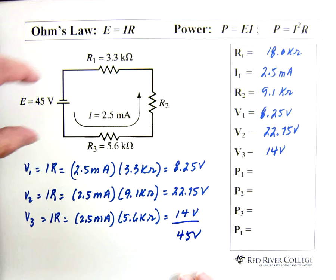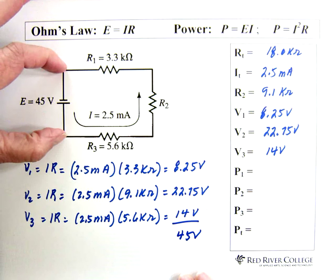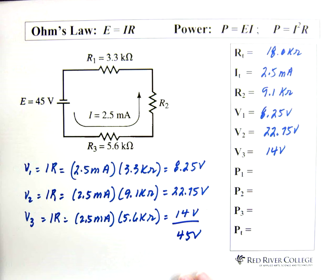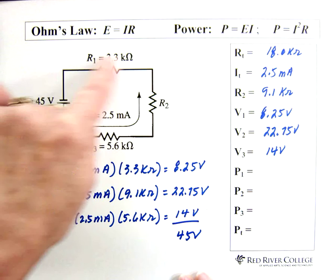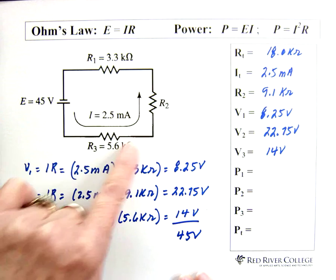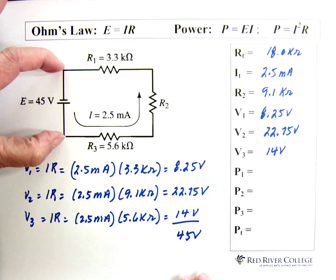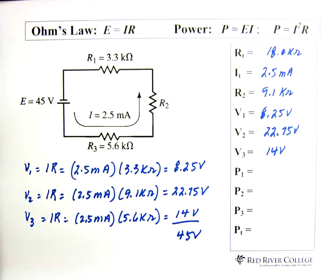The voltage drop across the battery has to equal the voltage drop. Well, actually, that's a little backwards. The voltage drop across these three resistors has to equal the voltage drop across the battery. And it does. So we're good.